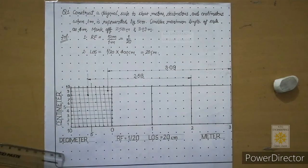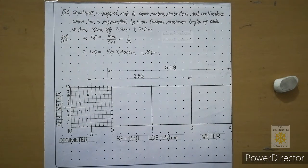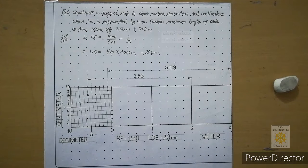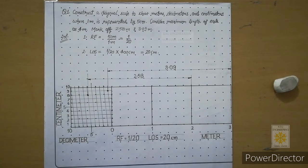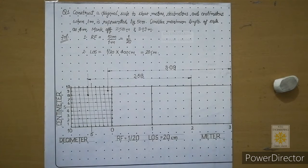This is the final answer for this particular question. I hope the construction of diagonal scale is clear to you. We will follow the same steps for all questions, but dimensions may vary depending on the question given. The construction will remain the same. Thank you very much.